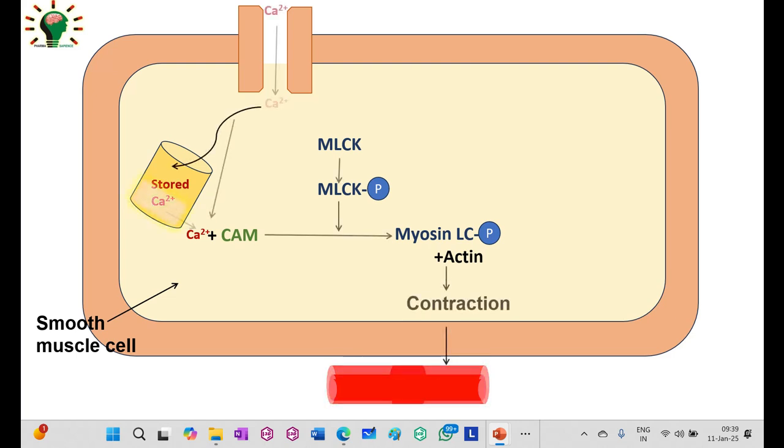This is how smooth muscle cells in our blood vessels tighten, increasing blood pressure.